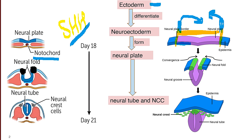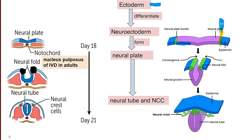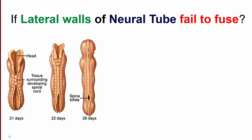We have a separate lecture on the adult derivatives of neural crest cells. This notochord has an adult derivative of the nucleus pulposus of the intervertebral disc. Now, if the lateral walls of the neural tube fail to fuse, then a neural tube defect occurs.